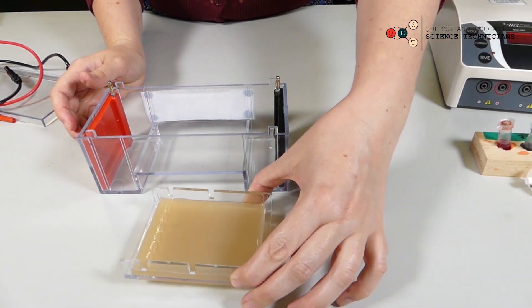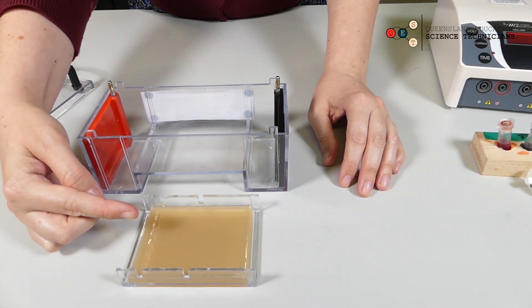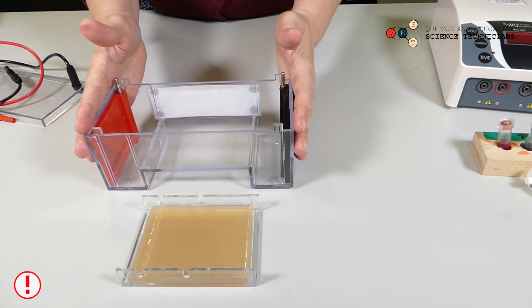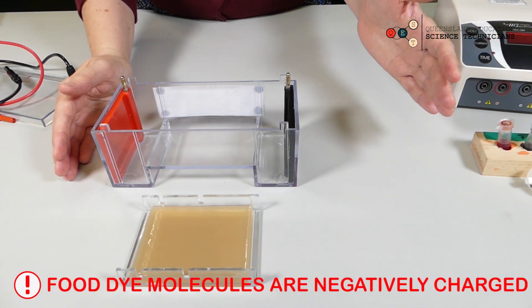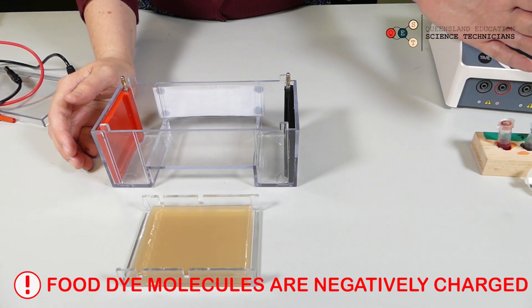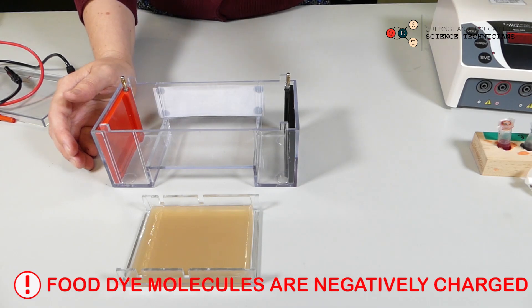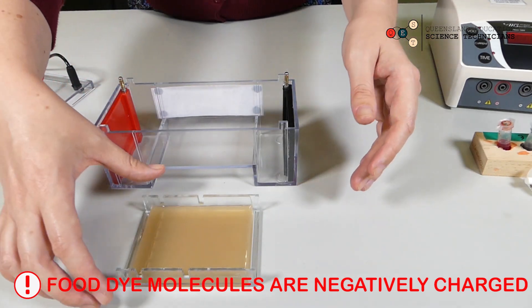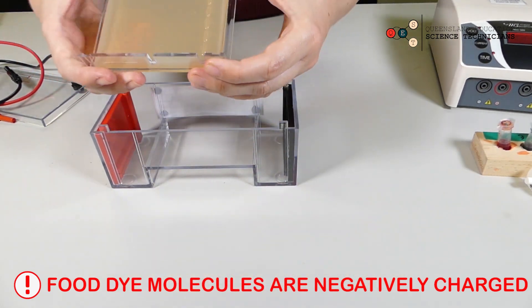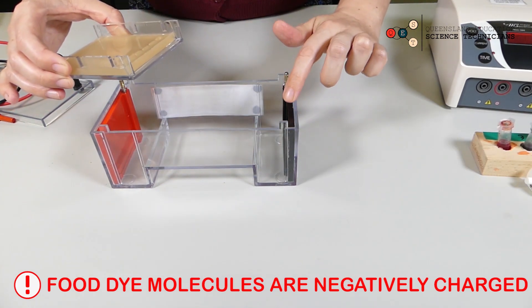Now it's important that we put the holes that we've made in the gel at the right end, because when we introduce an electrical current all of our food dye is going to want to move in one direction. If we put it in the wrong way around, it'll just move off the end of the gel and into your buffer solution. So we need to place this in our electrophoresis chamber with the wells next to the black end.